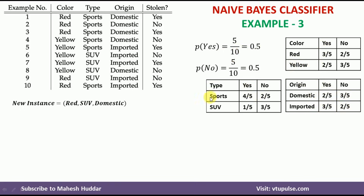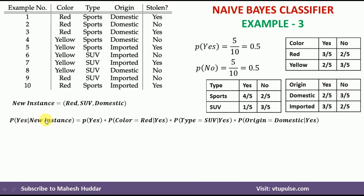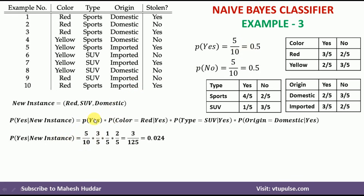Once we have the prior and conditional probabilities, we can classify the new instance using the Naive Bayes classifier equation. The probability of yes given the new instance equals P(yes) × P(color=red | yes) × P(type=SUV | yes) × P(origin=domestic | yes). Substituting values: 5/10 × 3/5 × 1/5 × 2/5 = 0.024.